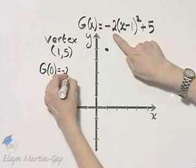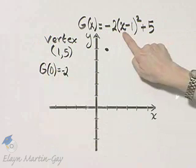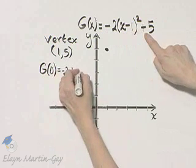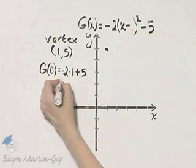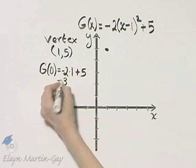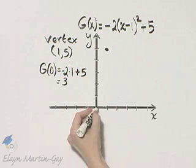It would be negative 2 times, if x is 0, that's negative 1 squared, which is 1, and then plus 5. So I have negative 2 plus 5, and negative 2 plus 5 is 3.